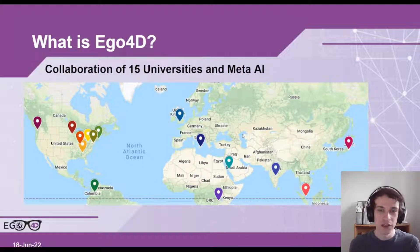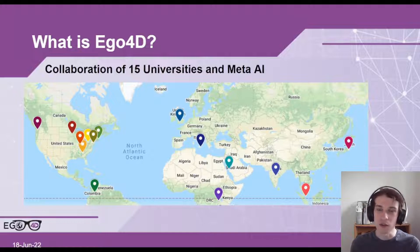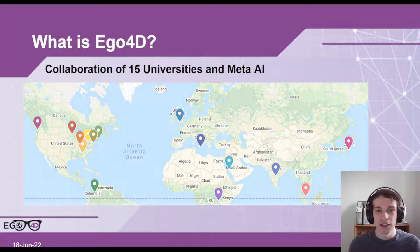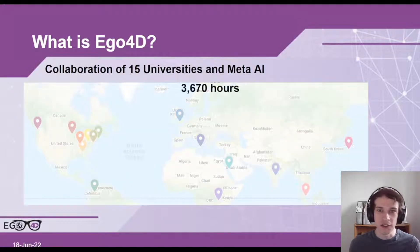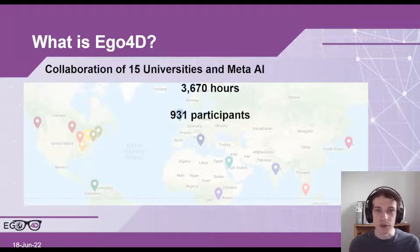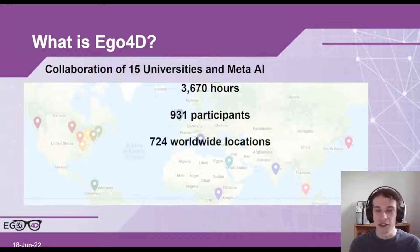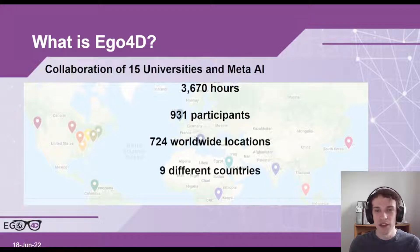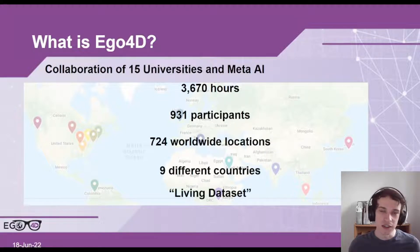What is Ego4D? Ego4D is a collaboration of 15 different universities and Meta AI all around the world. It covers 3,670 hours of video, all recorded from a first-person perspective. Through this we had 931 different participants recording videos in 724 worldwide locations. This spans nine different countries and constitutes a living dataset, so these values are being updated all the time.